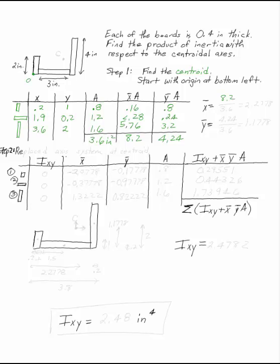So x bar is going to be 8.2 over 3.6, which is 2.2778. And y bar is 4.24 over 3.6, that's 1.1778. These are the location of the centroid as measured from O.